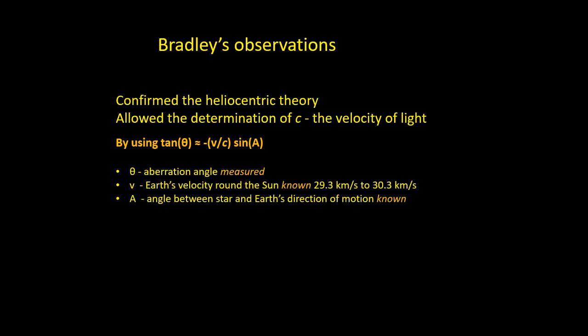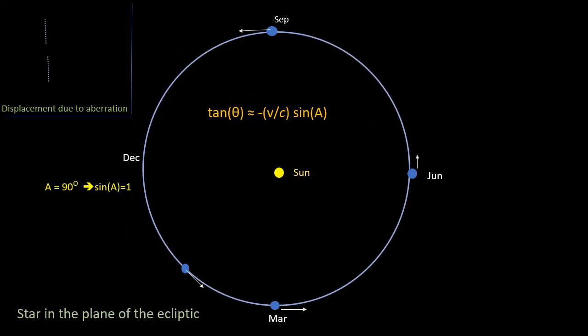So, with those three known quantities, Bradley was able to work out from this equation that C, the speed of light, is 301,000 km a second. That's in today's units. And this is actually remarkably within a half a percent of the correct value.